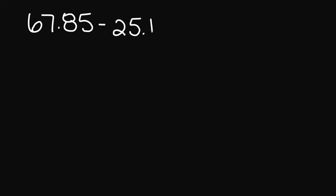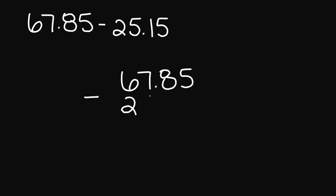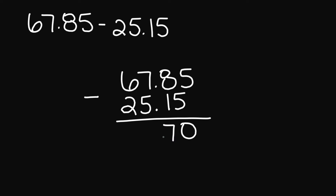Let's try 67.85 minus 25.15. Let's go ahead and line up our decimals and our numbers. 5 minus 5 is 0, 8 minus 1 is 7. Bring that decimal down. 7 minus 5 is 2. And then you have 6 minus 2, that's going to give you 4. So your final answer is 42.70.